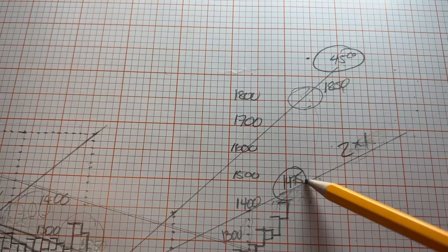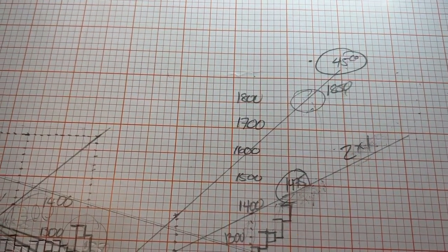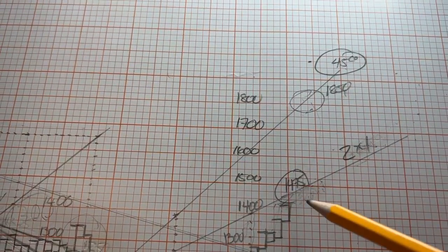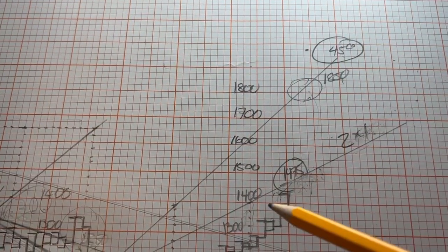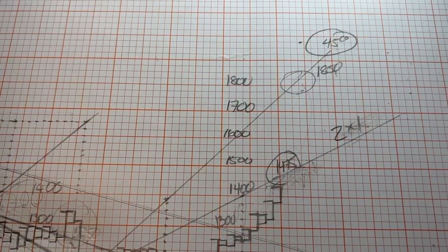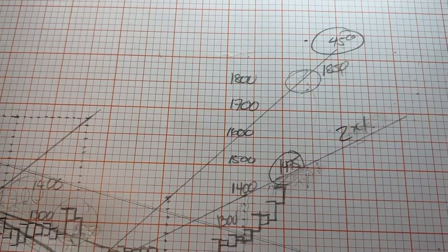So if ETH breaks out above $1,500, ETH goes parabolic. If ETH meets resistance at $1,500, Bitcoin goes parabolic. That's the Ethereum update.